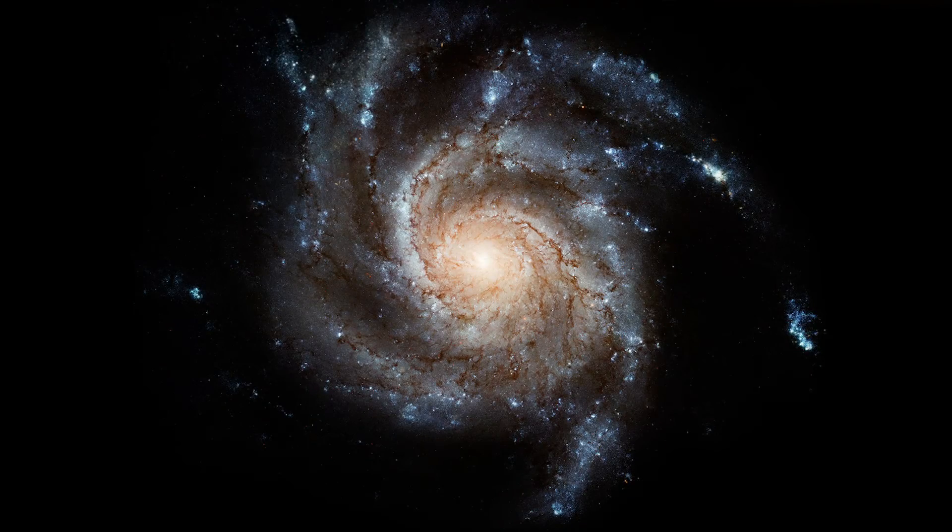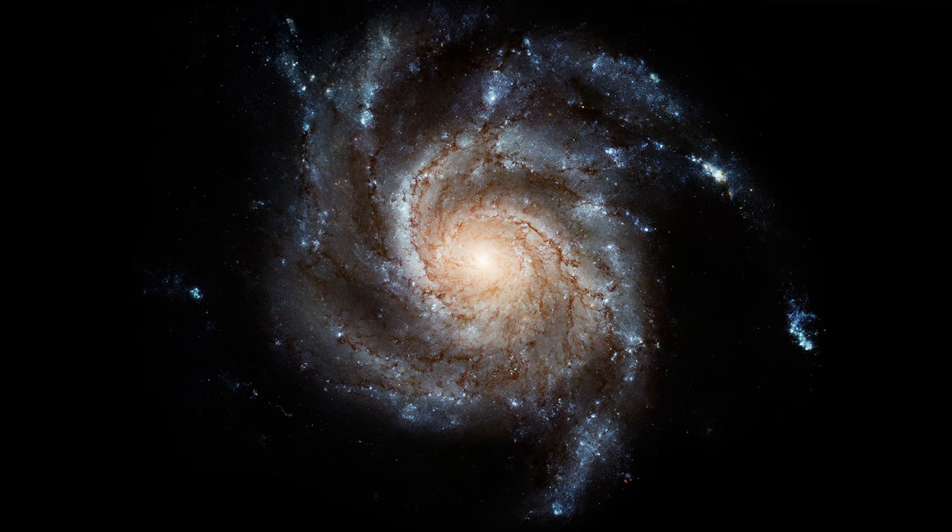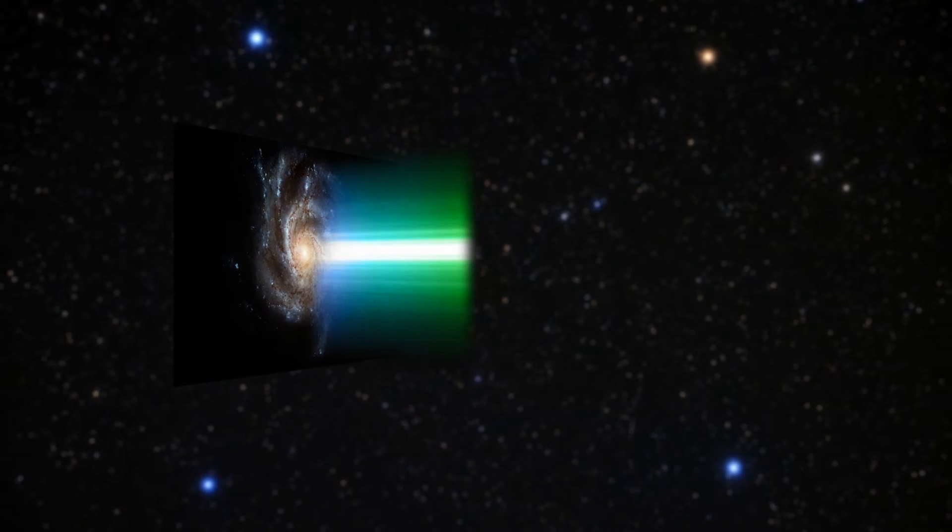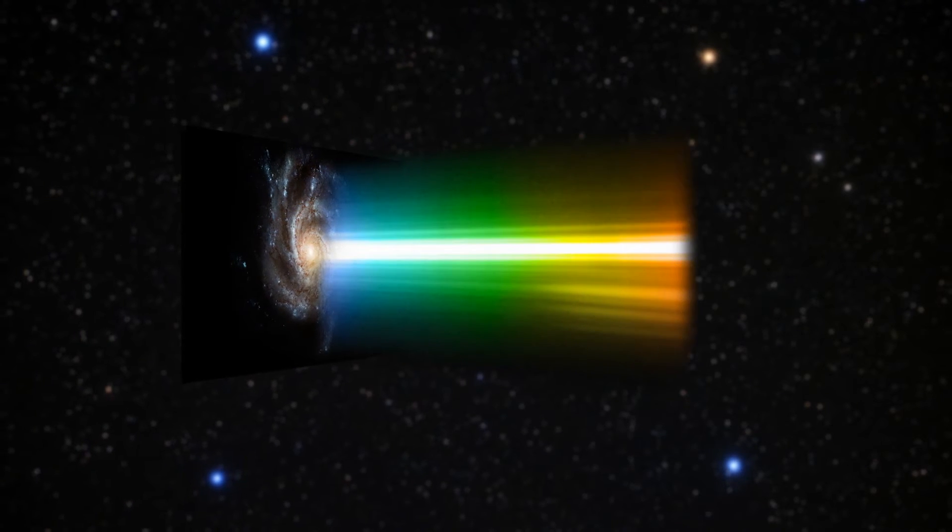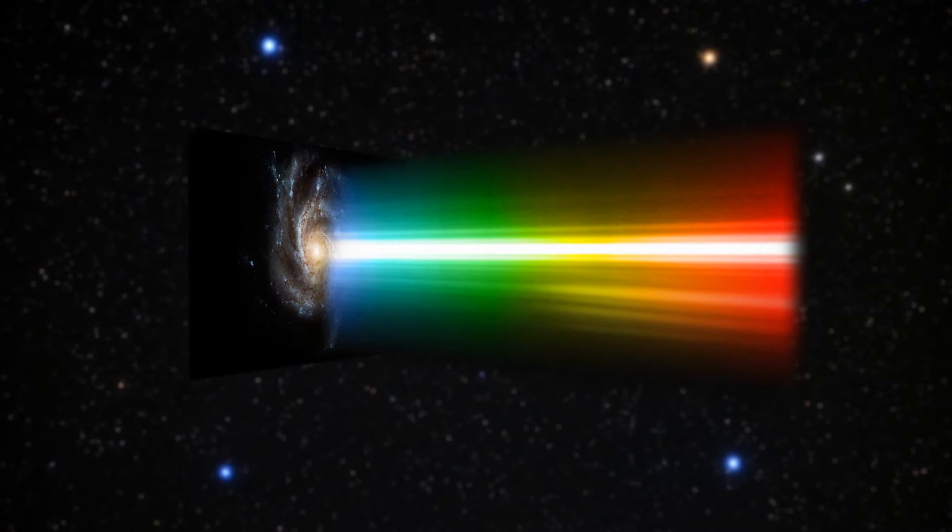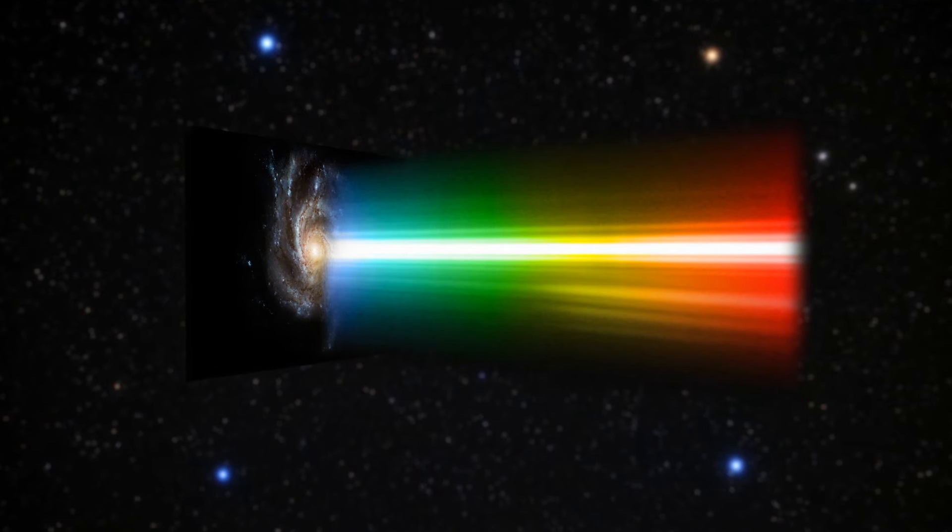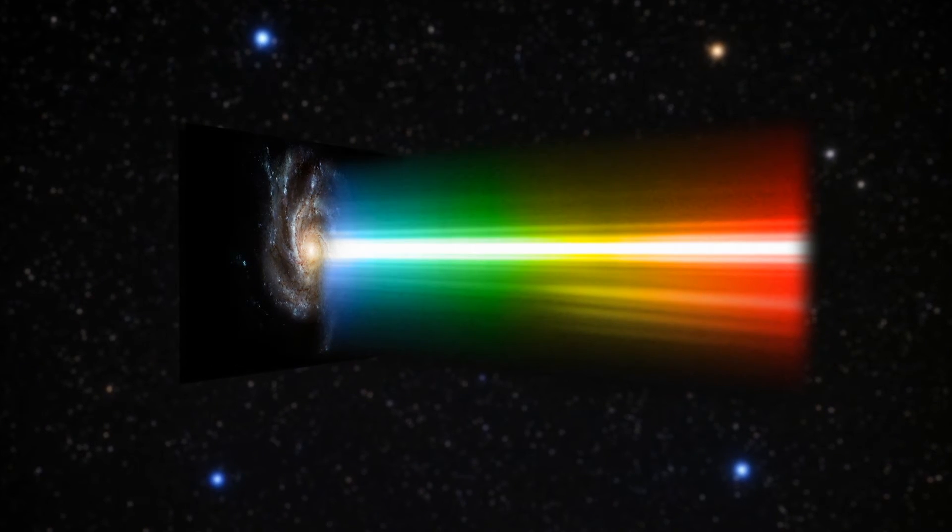A distant galaxy's spectrum reveals which elements it's made of. Every substance affects or emits light in a particular way, imprinting a series of bright or dark lines in the spectrum that betrays its presence.